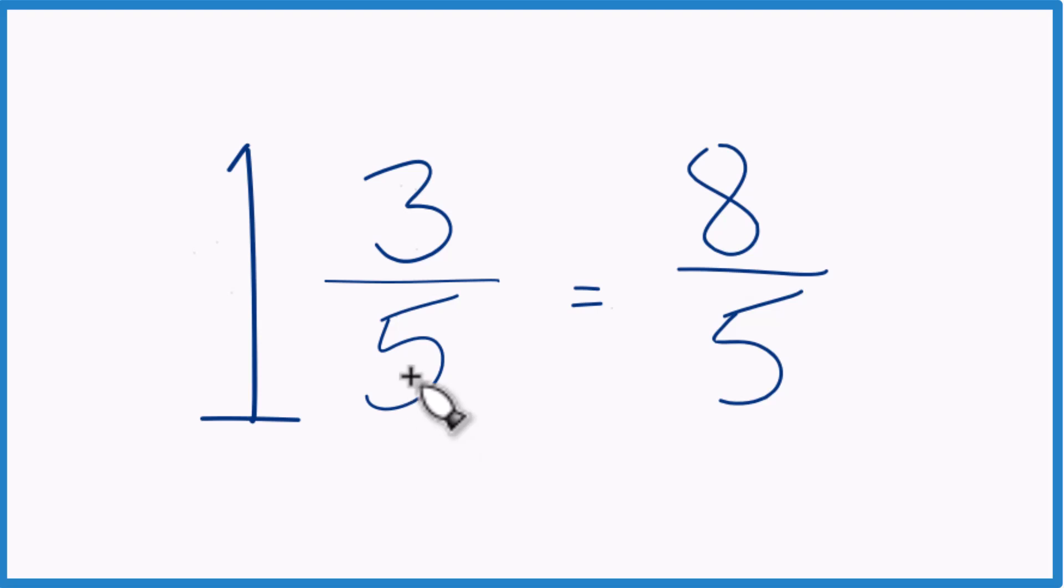1 times 5 is 5. 5 plus 3 is 8. That's the numerator. Bring the denominator across and we've got our improper fraction.